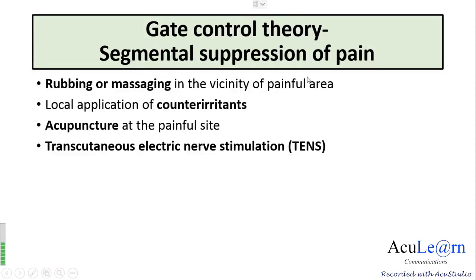The segmental suppression of pain explains the relief of pain in the following maneuvers. Rubbing or massaging in the vicinity of the painful area reduces the pain, which may be due to simultaneous activation of the touch fibers or A-beta fibers, which enhances the activity of the inhibitory interneuron in the dorsal horn.